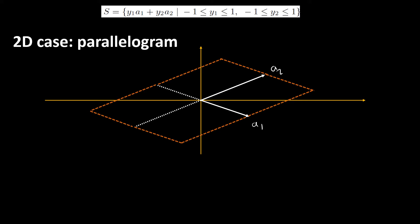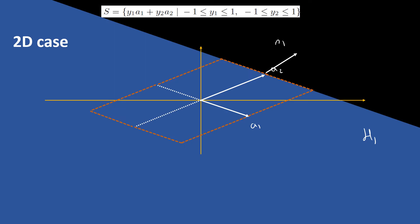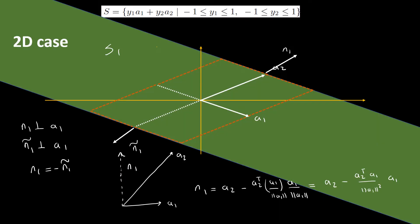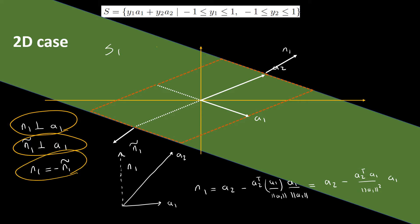If we represent the parallelogram as hyperplanes or half-spaces, we have shown it is a polyhedron. We start with half-space H1, whose normal n1 is perpendicular to a1. H2 is a half-space whose normal n1-tilde is also perpendicular to a1. The intersection of H1 and H2 is S1. The good news is that n1 equals negative n1-tilde, so let us find n1.